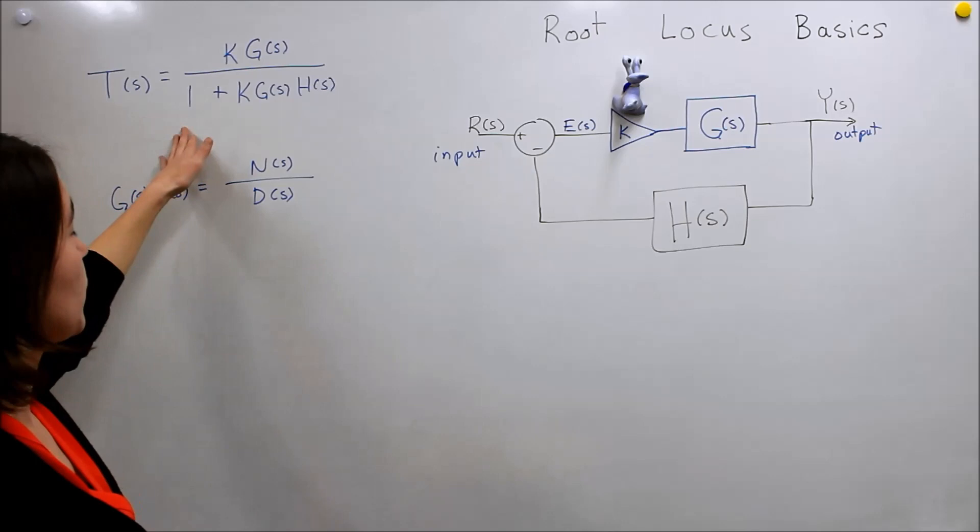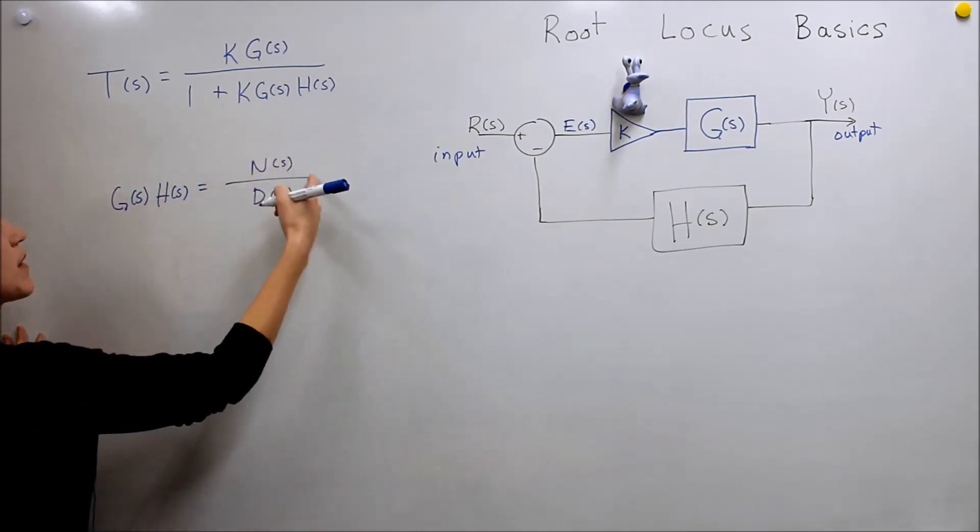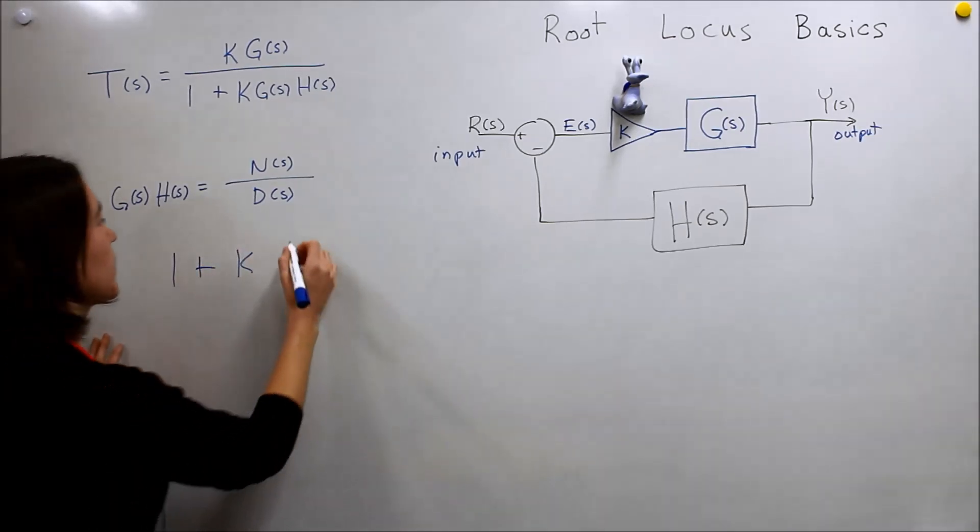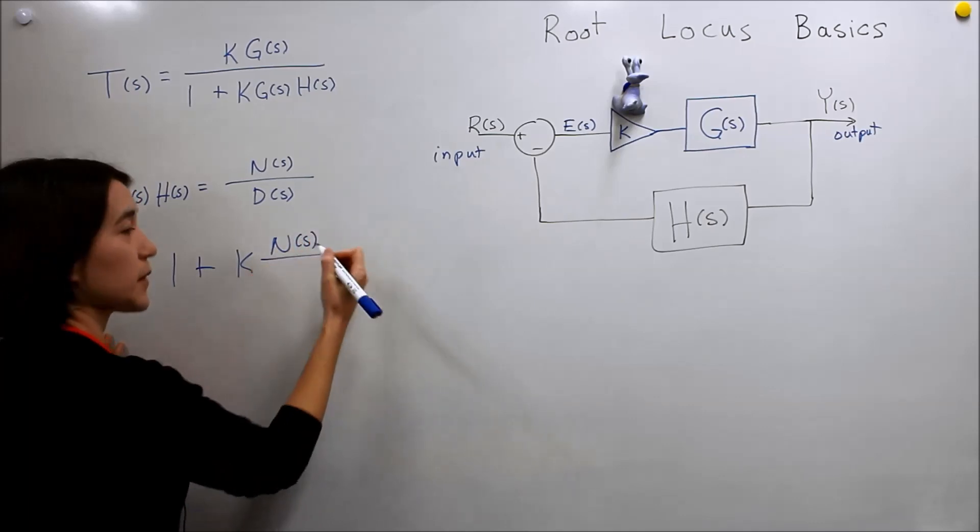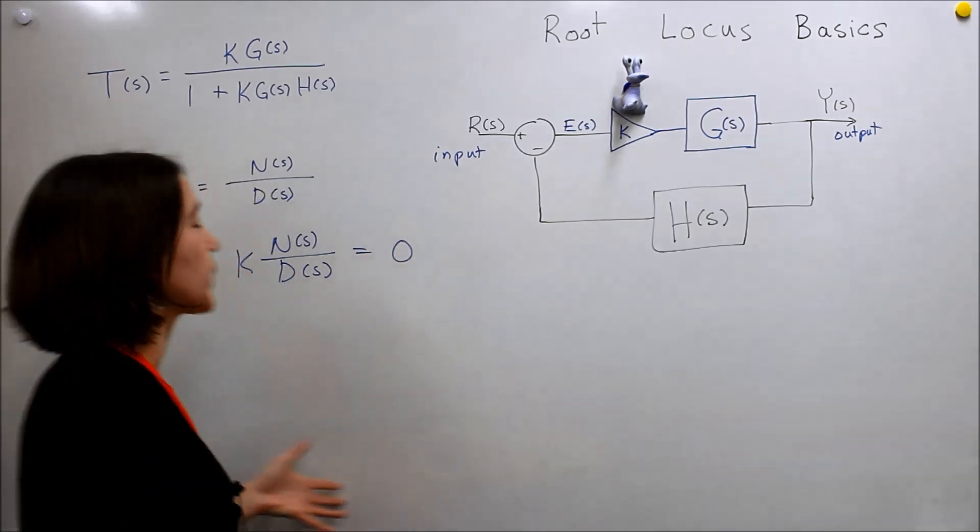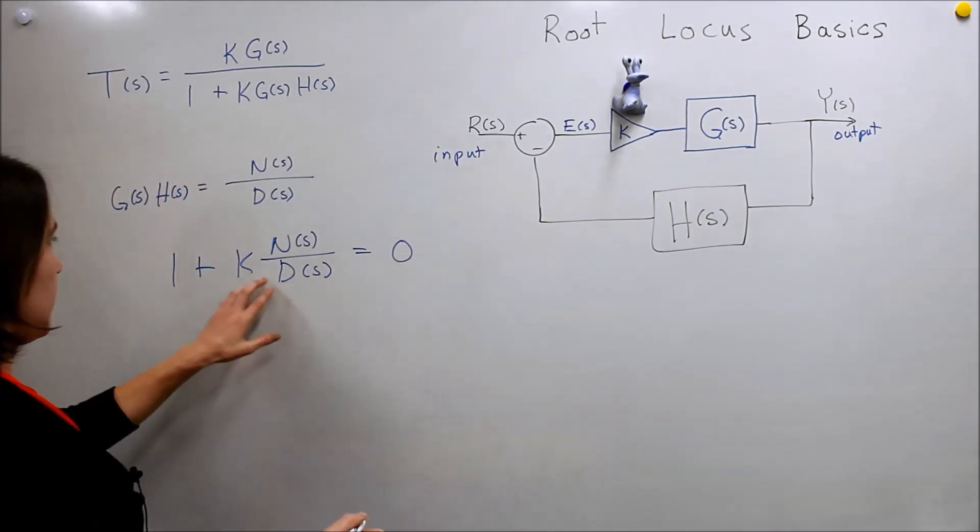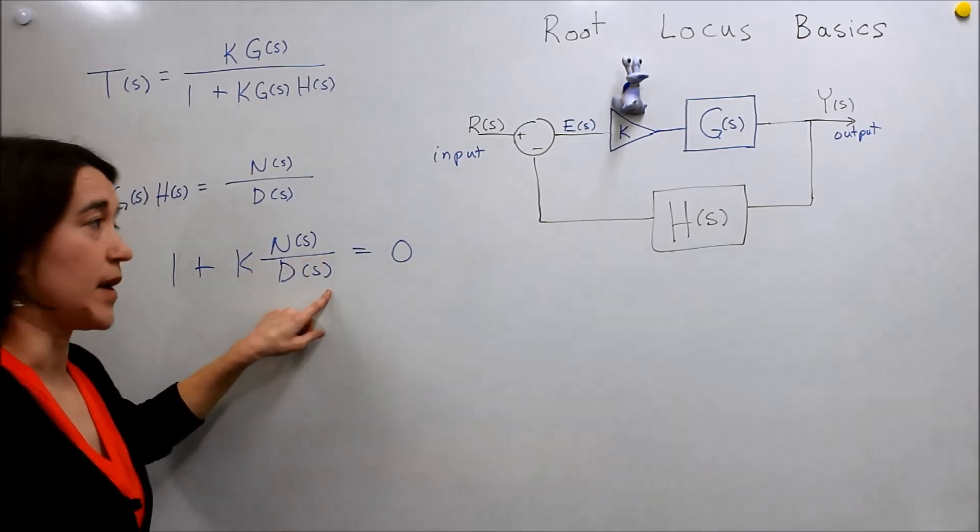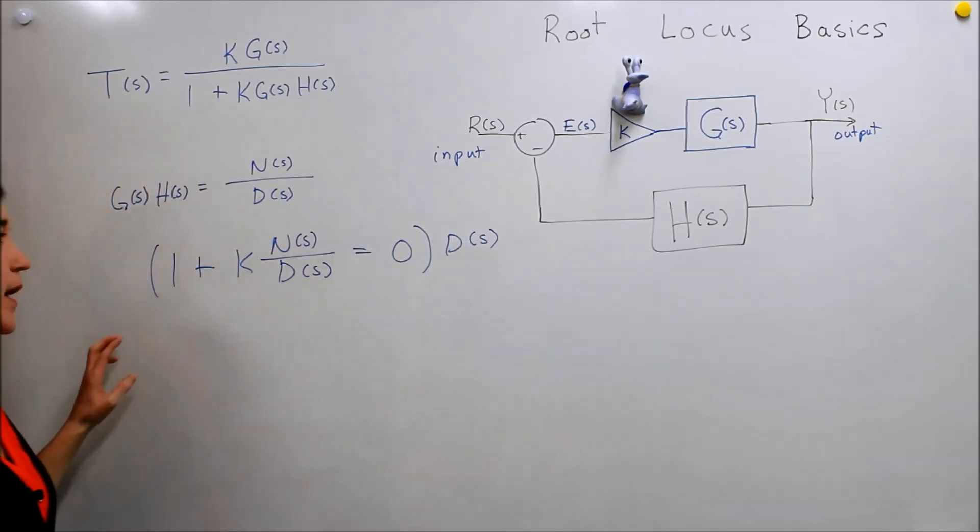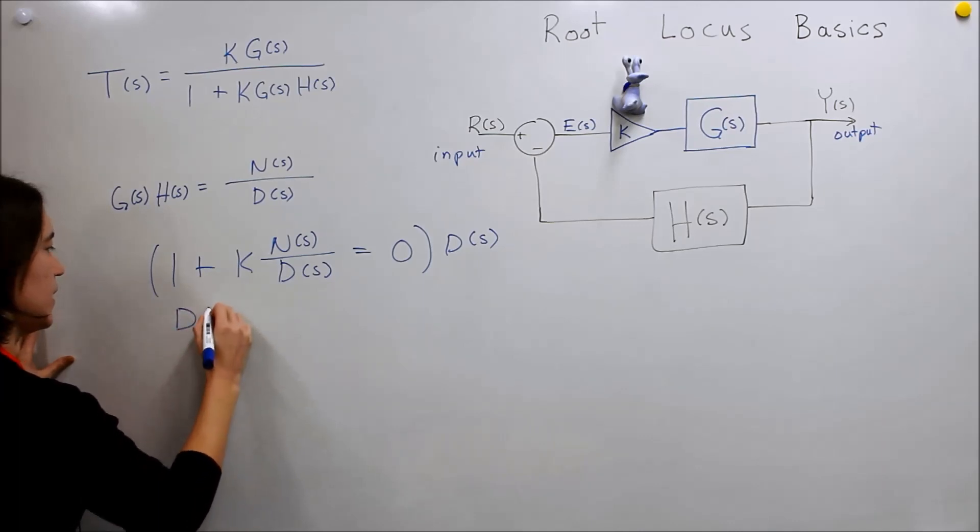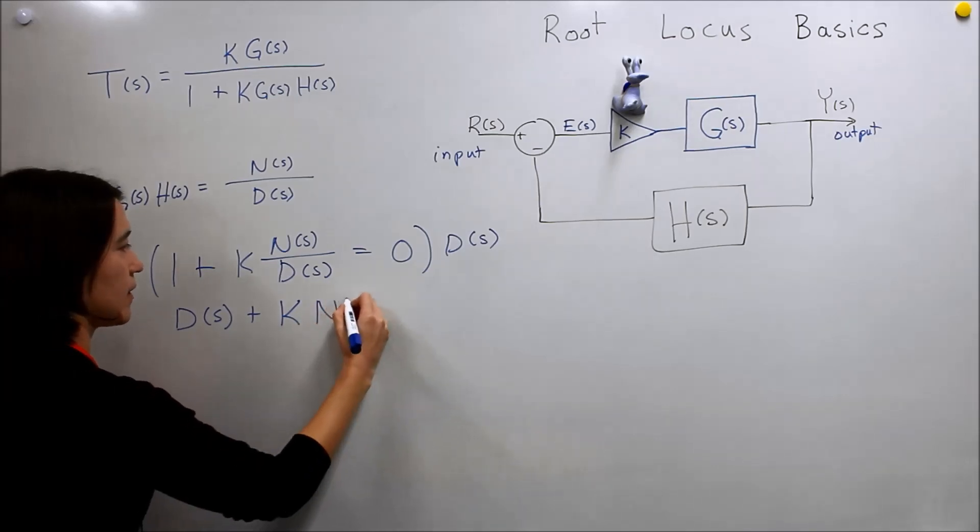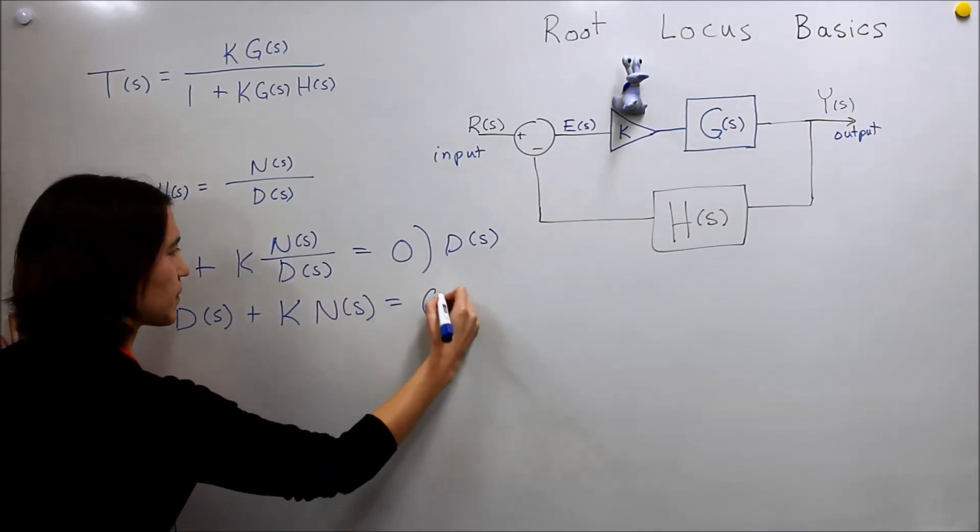So we want to look at our poles here, and if we plug this equation into our pole equation, you get 1 plus K times the numerator expression in terms of S and some denominator expression, and this has to be equal to zero to evaluate the poles. Now we usually want to get rid of any S's in the denominator, so we can multiply this whole expression by D of S, and then we can solve it here. So here we have D(S) plus K times N(S) equals zero.